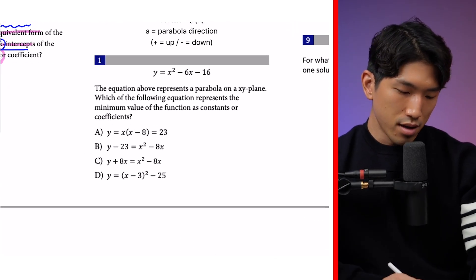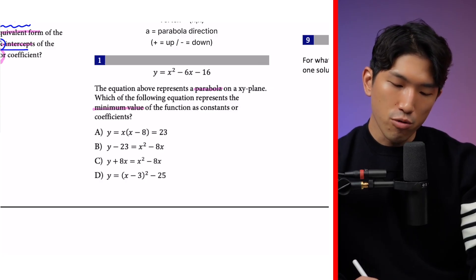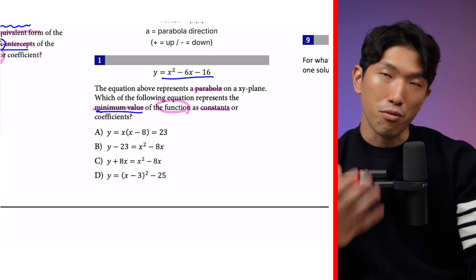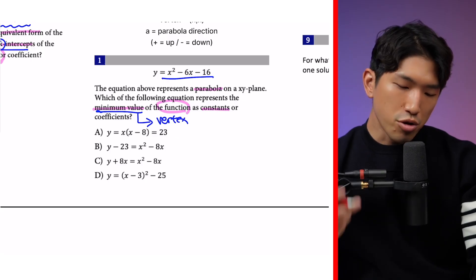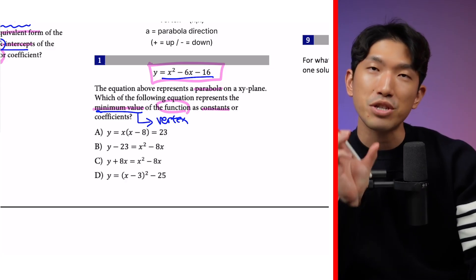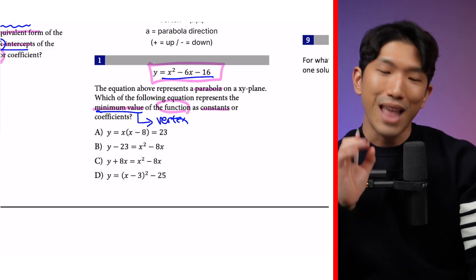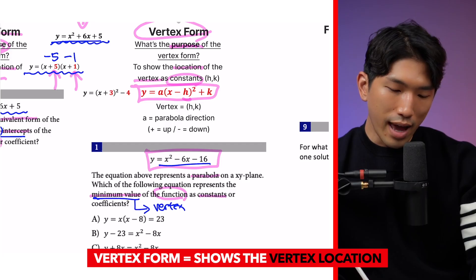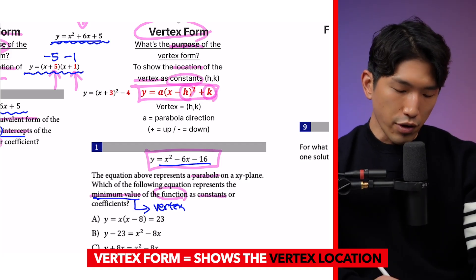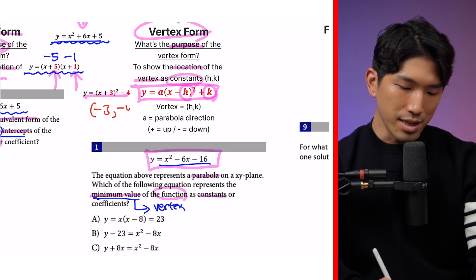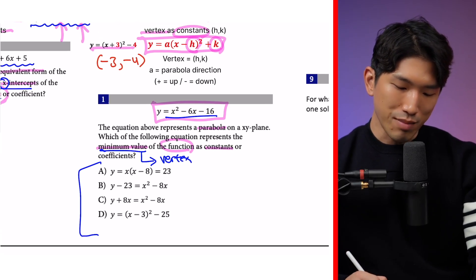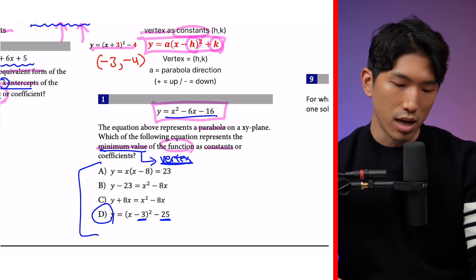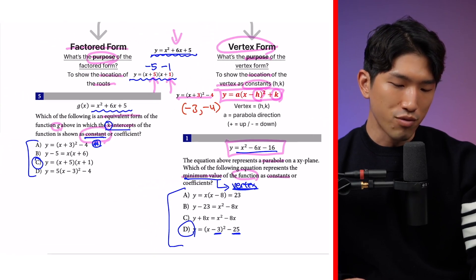What if the question asks you to represent the minimum value as constants instead of x-intercepts? The minimum value of a parabola is its vertex. So you need to rewrite the equation so the vertex location is visible directly from the equation — that's the purpose of vertex form. The vertex form looks like a(x - h)² + k, where h and k are the x and y coordinates of the vertex. For example, a vertex at (-3, -4) is directly readable. In the answer choices, D represents the vertex as constants using 3 and 25, so it's the correct answer.